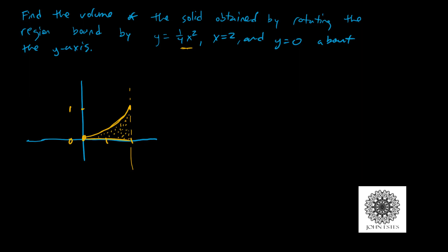We're rotating this region about the y-axis, so you can imagine it being spun around. We have negative 2 out here and positive 2, and you can visualize some sort of revolution — a 3D shape. We have two different methods we can use to find the volume, and I'll go through both of them.